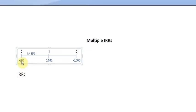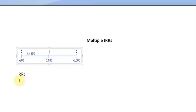Let's assume a project which has $800 of initial investment — that is why this is shown with a negative number. The cash inflow from the project at the end of the first year is going to be $5,000, but the cash inflow at the end of the second year is going to be minus $5,000. What you have here is a cash flow stream which is non-conventional, and when that happens, there is going to be a problem with the internal rate of return method.